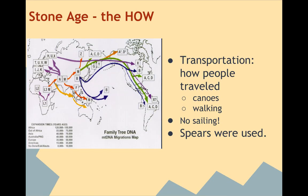How are people moving around at this time? Canoes and walking — they're going to try to stick close to the shore. The shore is going to give them a water source as well as a food source. We don't have the advent of sailing yet, and one of the main tools used for hunting is a spear.